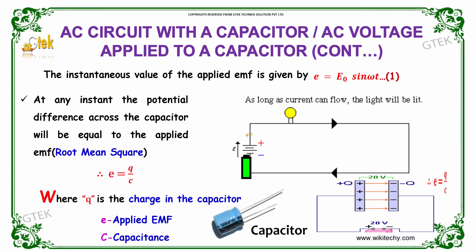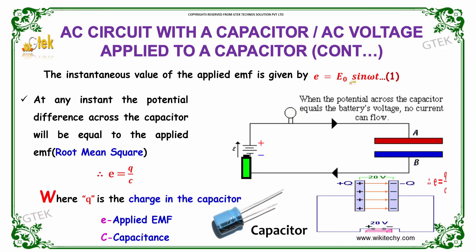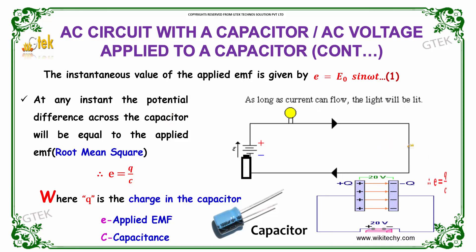The instantaneous value of the applied EMF is given by E equals E0 sin ωt. At any instant, the potential difference across the capacitor will be equal to root mean square.